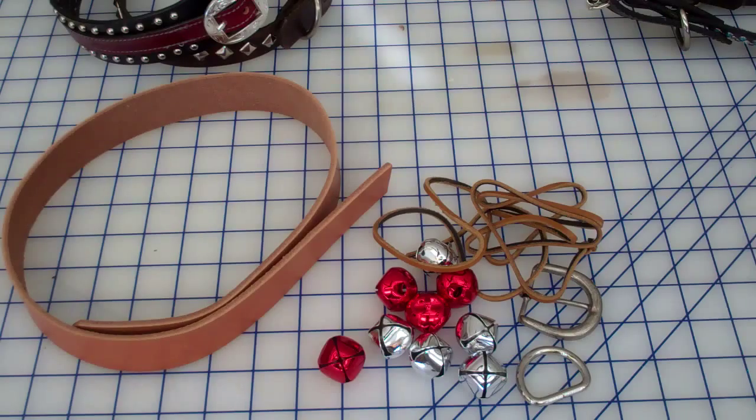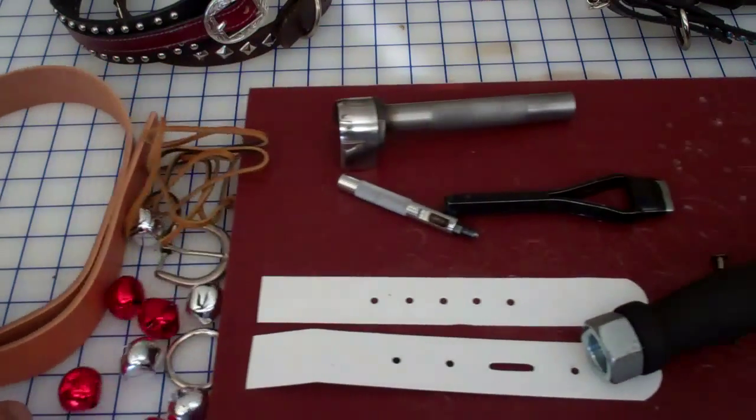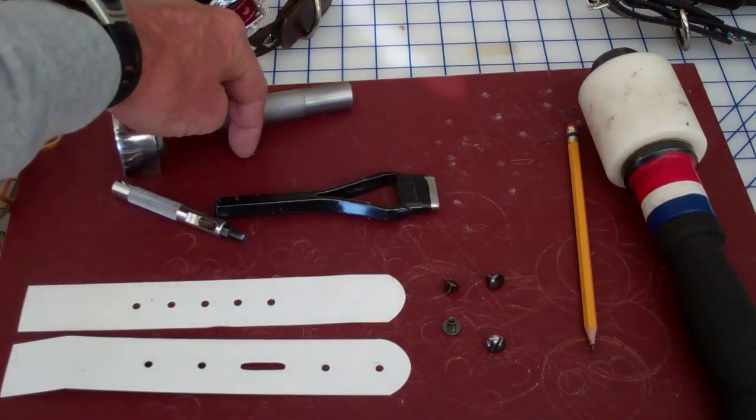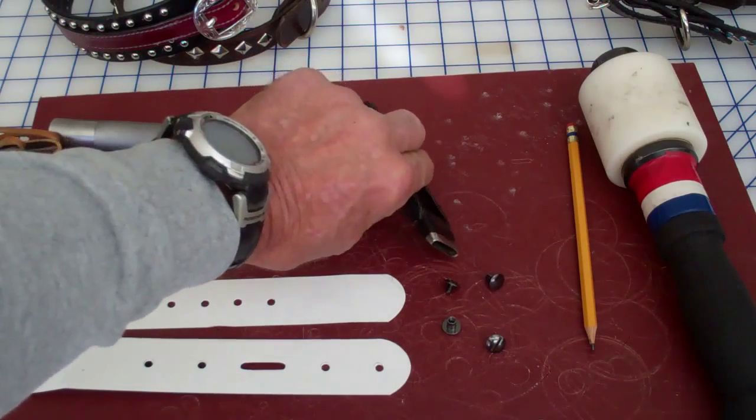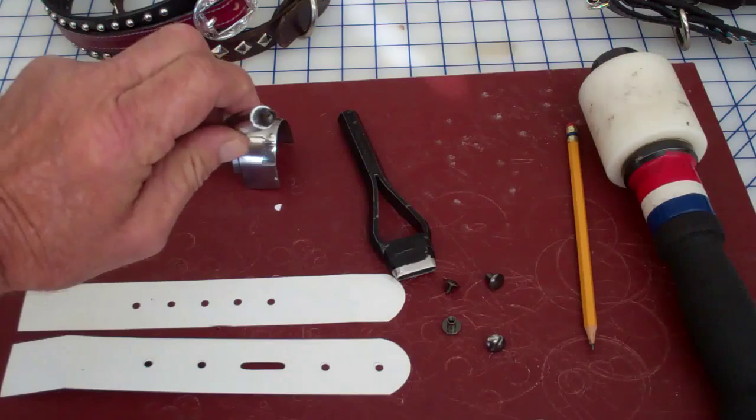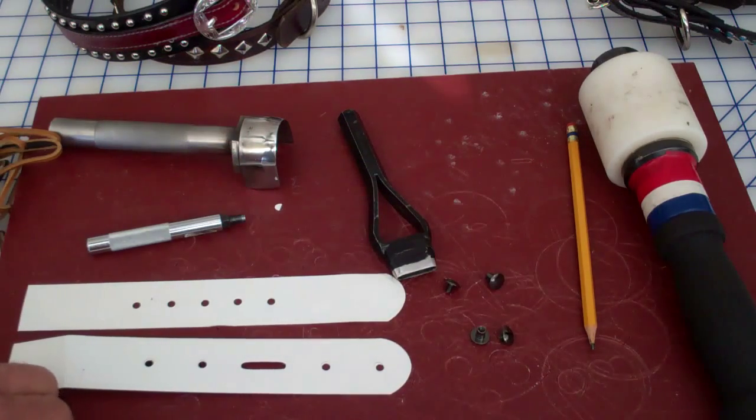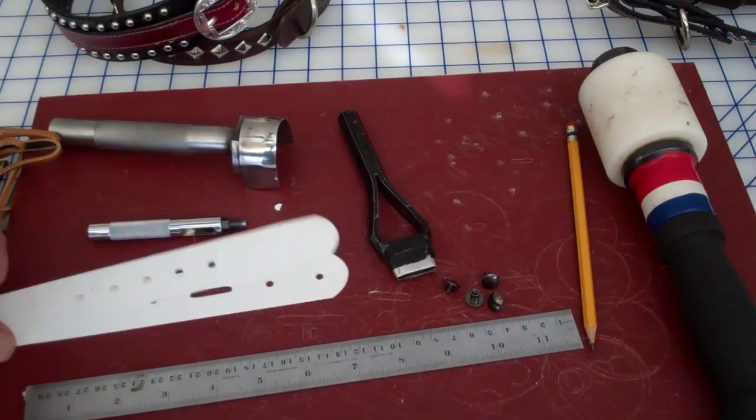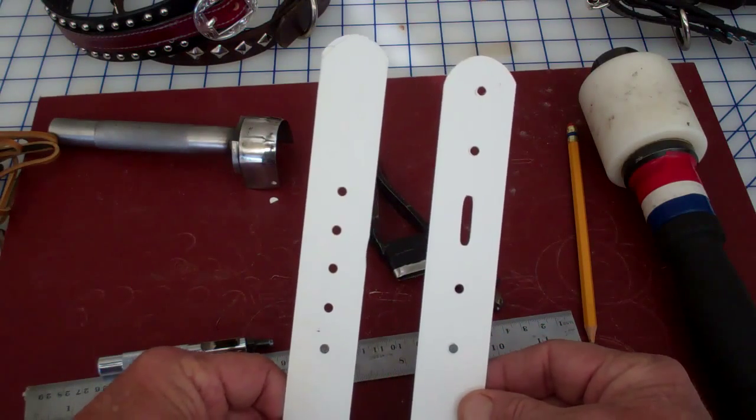As far as tools, we're going to use a mallet, a strap-end cutter, an oblong cutter, a hole punch, some Chicago screws, of course your ruler, a pencil, and also I made templates for when I make belts so I could lay it on and get all my holes straight.